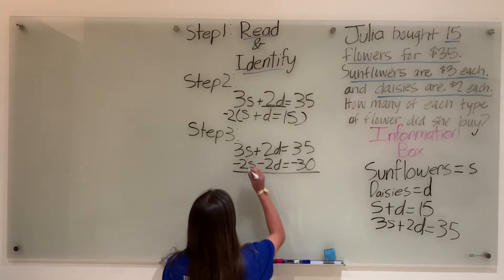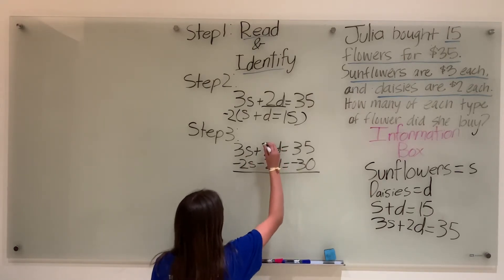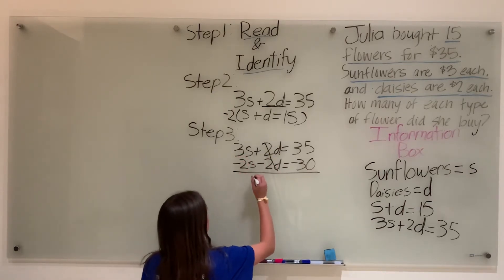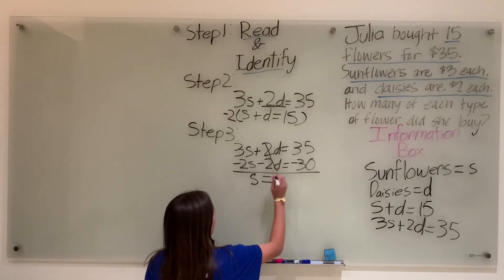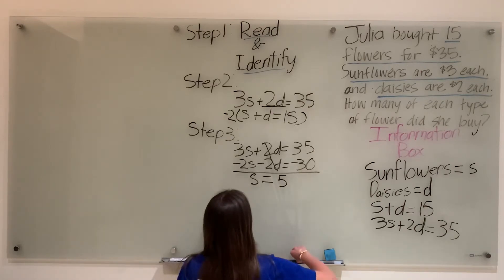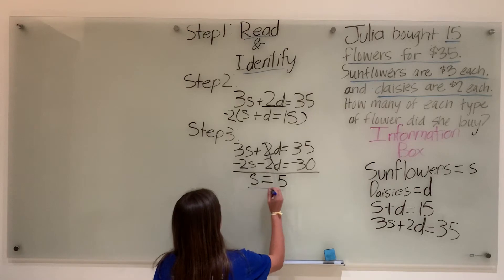So now adding it up, we get these two cancel out because negative 2d plus 2d. And 3s minus 2s equals 1s, but we don't write the 1. And 35 minus 30 is 5. So what we get here is s equals 5.